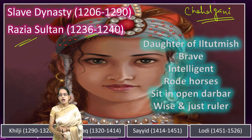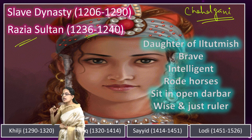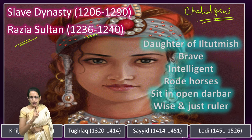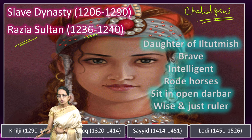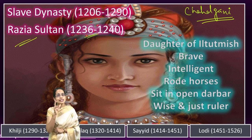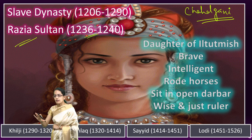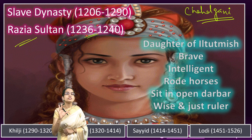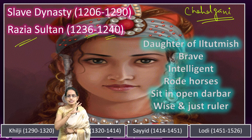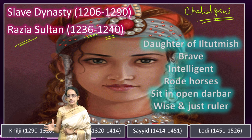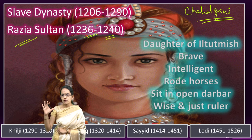Initially, the nobles accused her of being very friendly to Yakut Khan, an Abyssinian noble. Later, she married and won over the province of Altunia. Both Razia and her husband tried to put down rebellions, but they were killed by rebels in 1240. The death of Razia Sultan created extremely chaotic conditions in the Slave dynasty. The Mongols started attacking from the north, Lahore was captured, and there was great death and destruction.